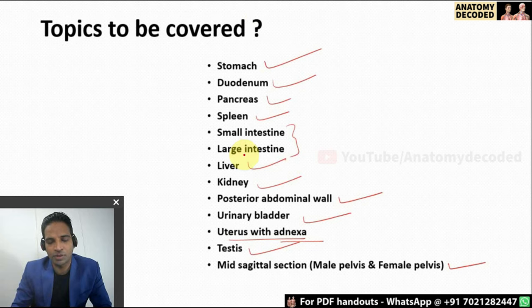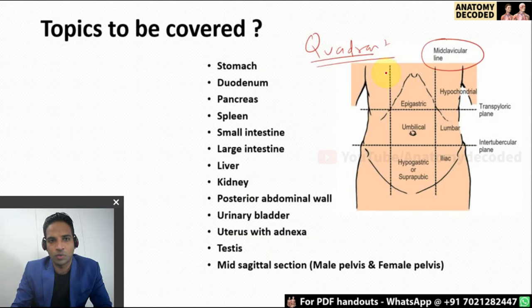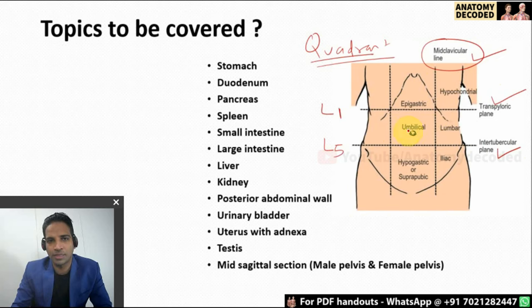Before beginning with the individual organs, let us have a brief overview of the location of these organs. To understand the locations, the quadrants of the abdomen are important. There are 2 vertical lines drawn at the level of the midpoint of the clavicle, that is the midclavicular line, and 2 horizontal lines — one at the transpyloric plane, another at the intertubercular plane. This is at the level of L1 vertebra and this is at the level of L5 vertebra. These 2 horizontal lines and 2 vertical lines divide the abdominal coordinates into 9 regions.